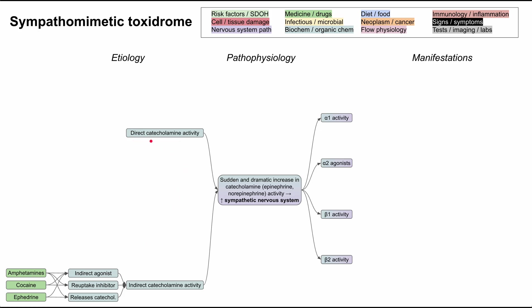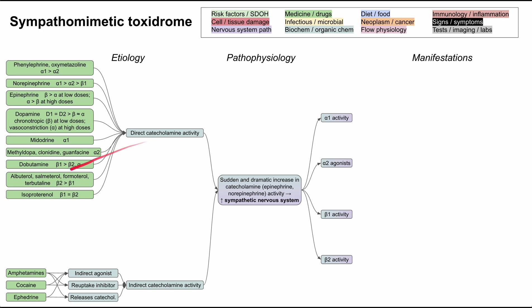Now let's talk about the etiologies of direct catecholamine activity. These medications tend to be given by providers in an ICU or surgical setting, or sometimes as outpatient meds. Phenylephrine is mostly an alpha agonist. Norepinephrine is alpha more than beta. Epinephrine hits all receptors, favoring beta at low doses and alpha at high doses. Dopamine has dopamine receptor effects similar to alpha and beta, with chronotropic effects at low doses and vasoconstrictive effects at high doses. Midodrine hits alpha-1 exclusively. Methyldopa, clonidine, and guanfacine hit alpha-2 exclusively. Dobutamine primarily hits beta-1.